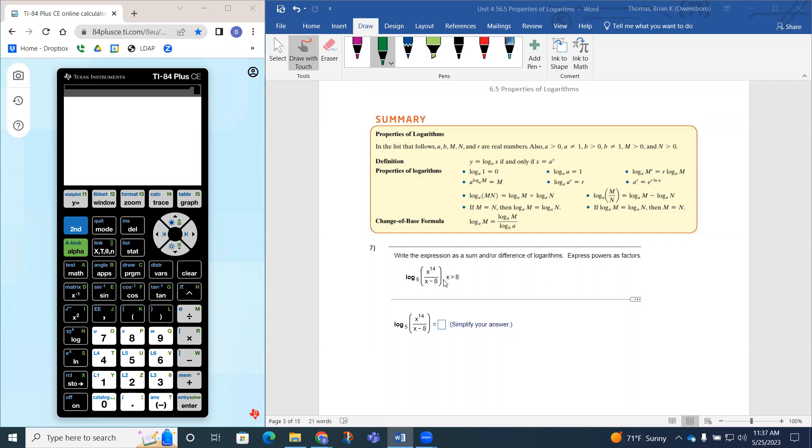This x greater than 8, that is actually our domain restriction. Notice that you cannot divide by 0 for one. But also you cannot take the log of a negative value. So this denominator would have to be greater than 8.